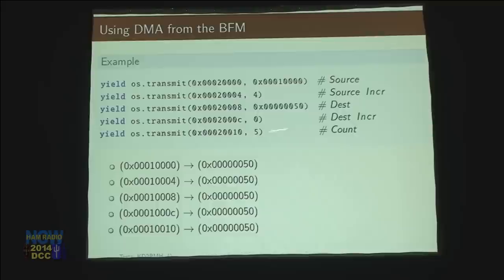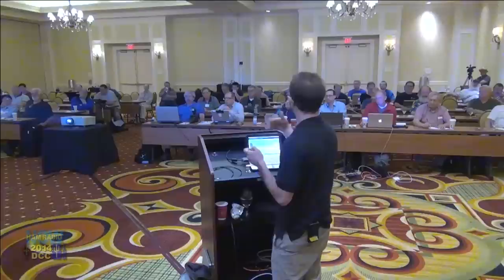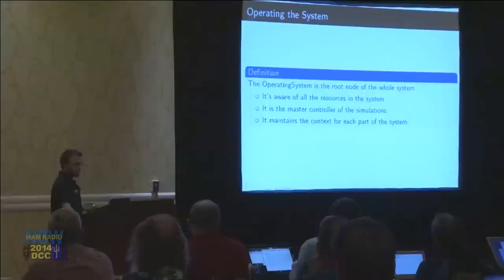Finally, you set the count — how many things you want to write. After you set up the first four configuration values, you write this last one. As soon as you write five things across the bus, it starts writing: it takes whatever is at memory address 1000 and writes it to address 50, then increments the source address by four and does it again — five times total. That's what the DMA controller does. It's a little extra state machine that does this process for us.